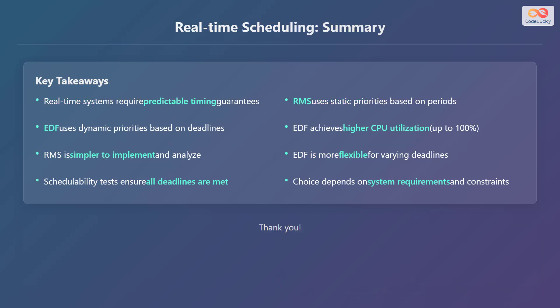In summary, real-time systems require predictable timing guarantees. Rate Monotonic Scheduling, or RMS, uses static priorities based on periods, while Earliest Deadline First, or EDF, uses dynamic priorities based on deadlines. EDF achieves higher CPU utilization, up to 100%, while RMS is simpler to implement and analyze.